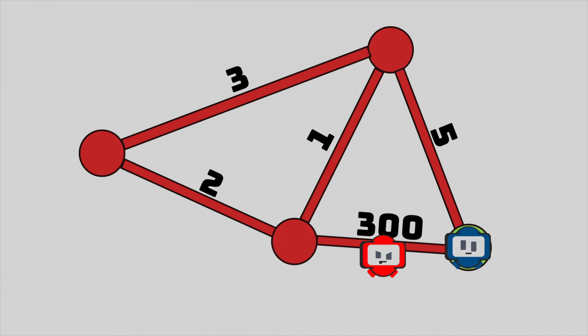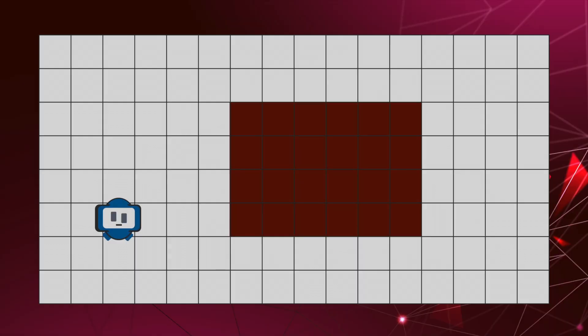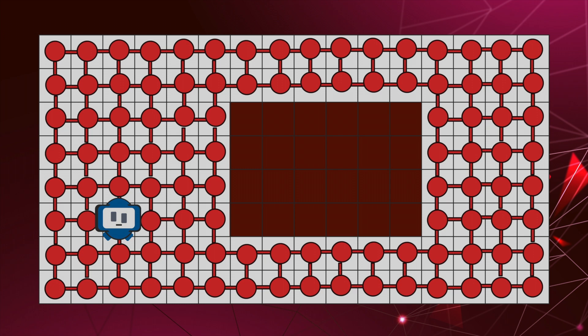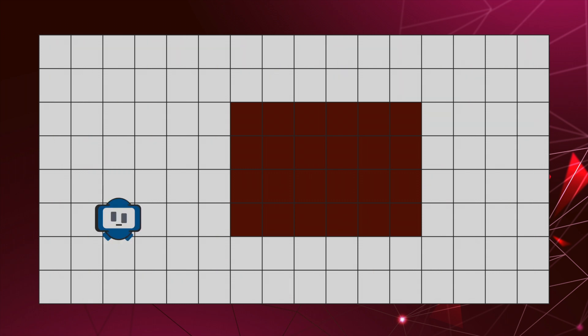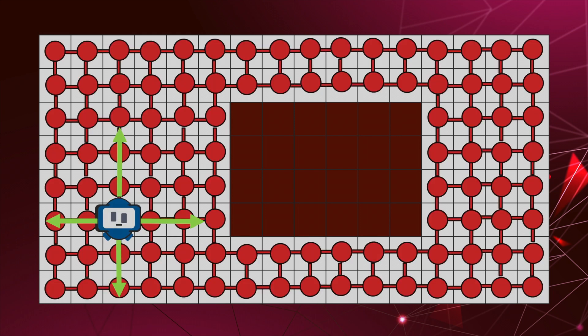For most of the pathfinding algorithms we are going to talk about, the costs can't be negative. Occupancy grids, which we talked about in the last video, were actually just graphs where all the edges have the same cost. Each grid square is a node and the edges represent how the robot can move. In this graph, Tango can move only vertically or horizontally one square at a time. That's why the edges are only in those directions. If we wanted Tango to move diagonally, we would just need to add diagonal edges. But how do we find a path to a goal in this mess?